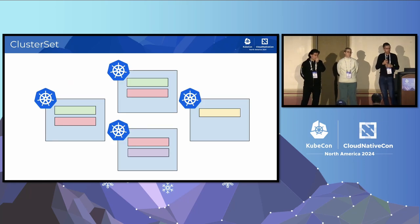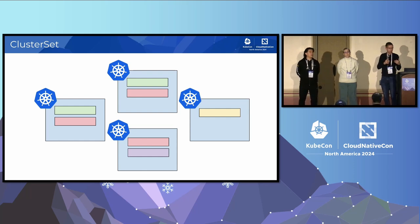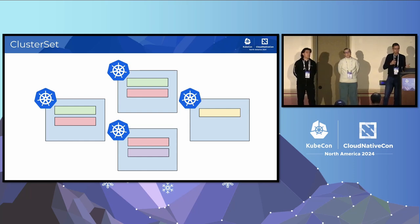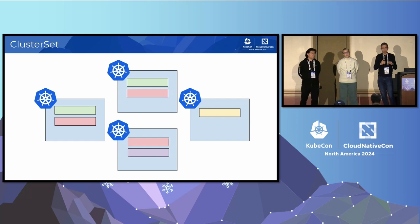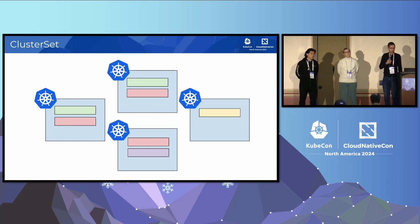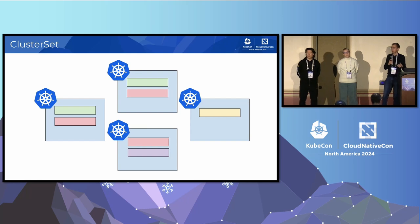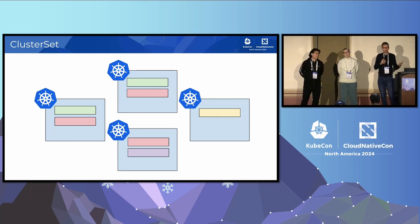One of the core concepts in multi-cluster that is important to understand is the idea of a cluster set. This really represents a pattern of use that we've seen from the field — it's a group of clusters that are governed by a single authority. In multi-cluster scenarios there are situations where you might want to do other things, but this is what the SIG focuses on: clusters that are governed by a single authority and that have a high degree of trust within the set. It's not about connecting services point to point from one cluster to another — it's about building something bigger with multiple clusters.